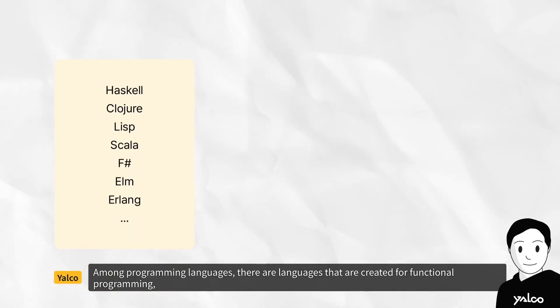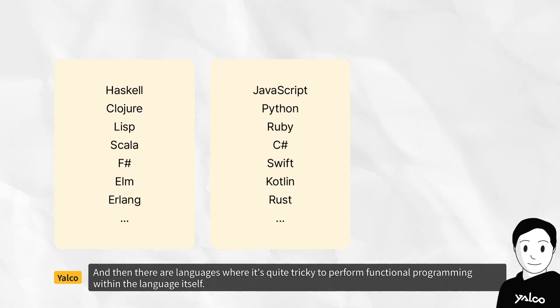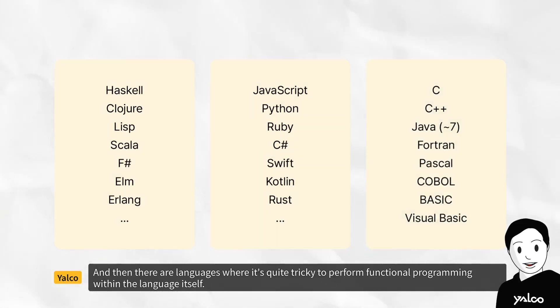Among programming languages, there are languages that are created for functional programming, while others may not be made specifically for it, but can be used for functional programming without any problems. And then, there are languages where it's quite tricky to perform functional programming within the language itself.